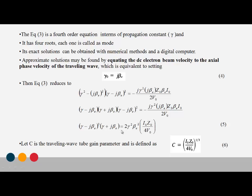With the substitution, we get gamma squared minus J beta-E, the whole squared. Applying the algebraic identity a squared minus b squared equals a plus b into a minus b, this equation expands to: gamma minus J beta-E, the whole cube, into gamma plus J beta-E, is equal to 2 gamma squared beta-E squared into I-nought Z-nought divided by 4V-nought.